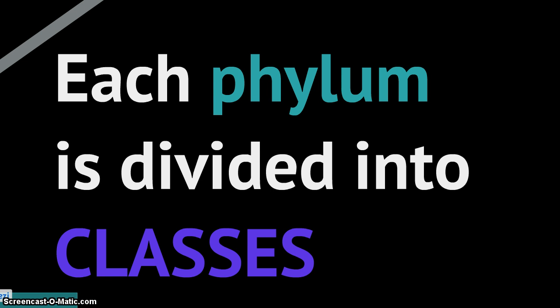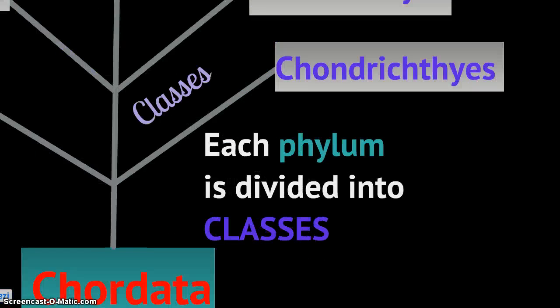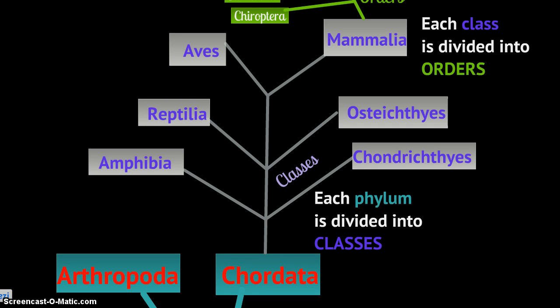Phylum Chordata is divided into classes. So far we have domain, kingdom, phylum, and now class. Phylum Chordata is divided into six classes: Chondrichthyes (sharks), Osteichthyes (bony fishes), Amphibia, Reptilia, Aves (birds), and Mammalia. These are the animals we tend to spend the most time on because they're the ones we have the most in common with.